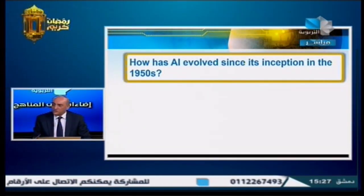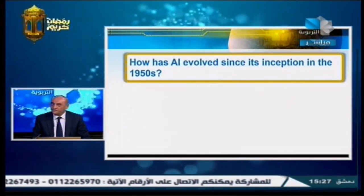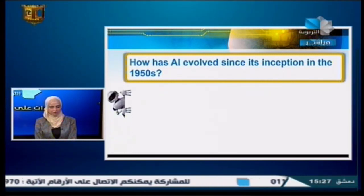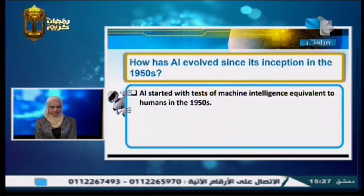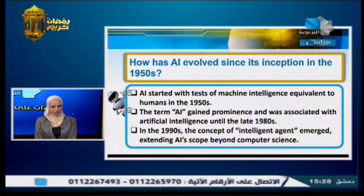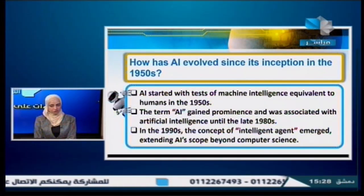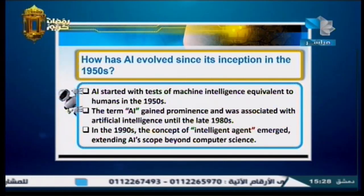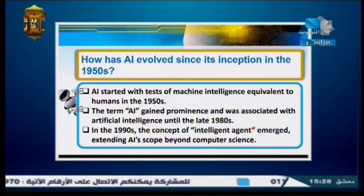How has AI evolved since its inception in the 1950s? AI started with tests of machine intelligence equivalent to humans in the 1950s. The term 'AI' gained prominence and became popular until the late 1980s. In the 1990s, the concept of intelligent agent emerged, extending AI's scope beyond computer science. It no longer is just about computers — it expands to govern many areas.